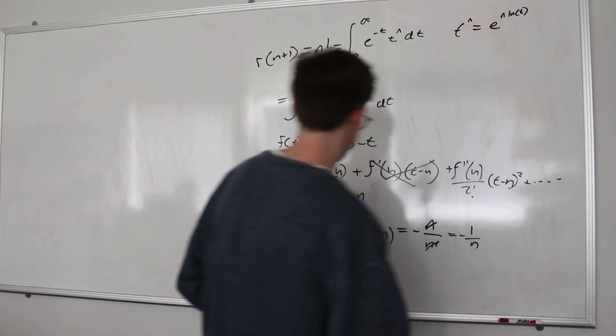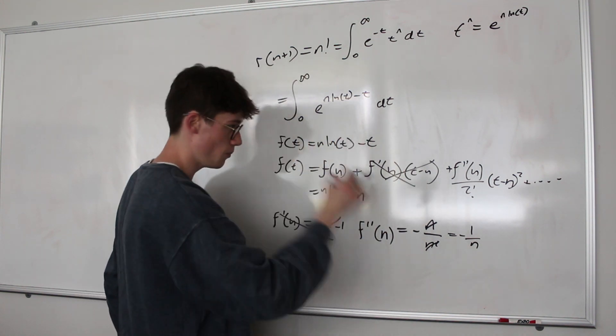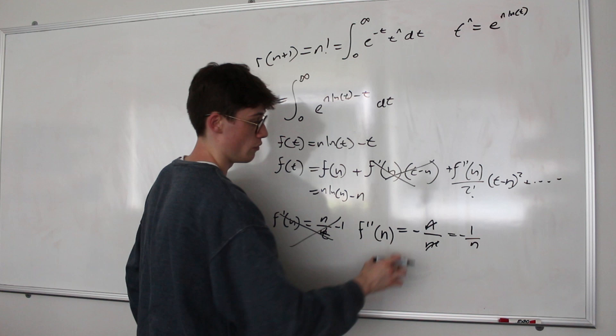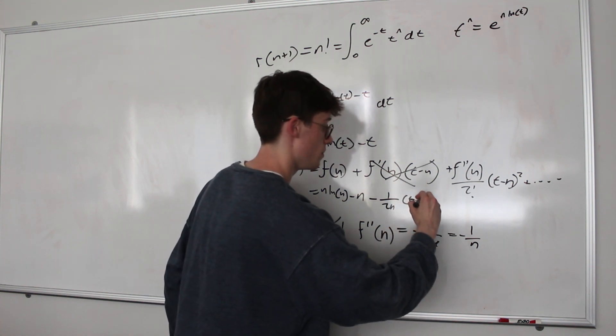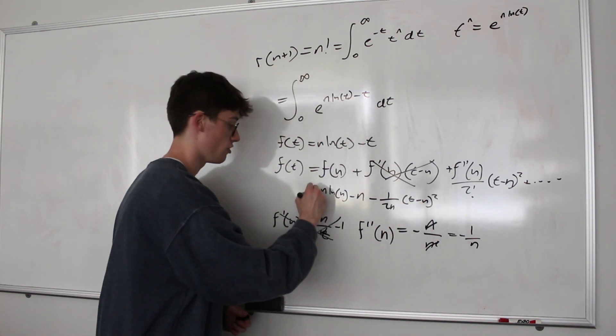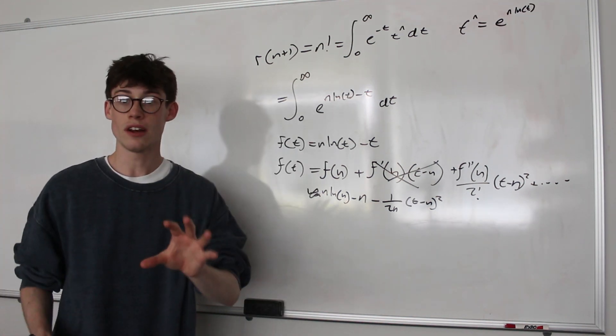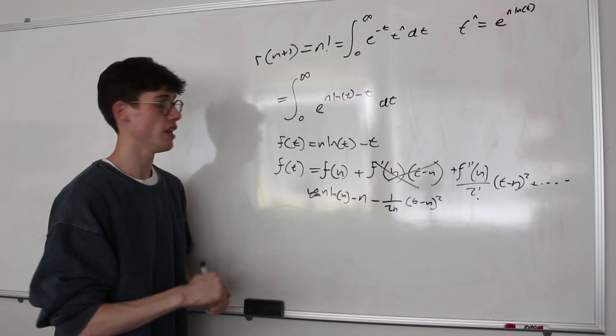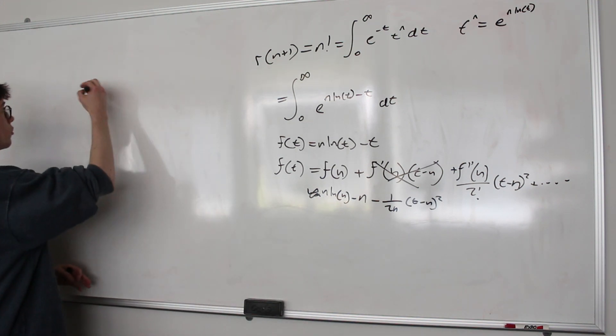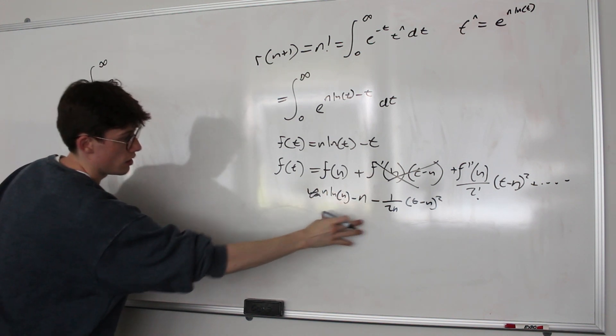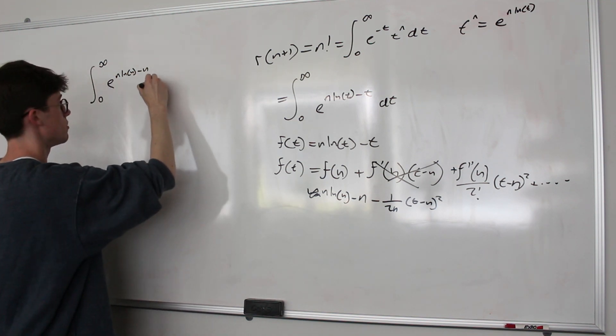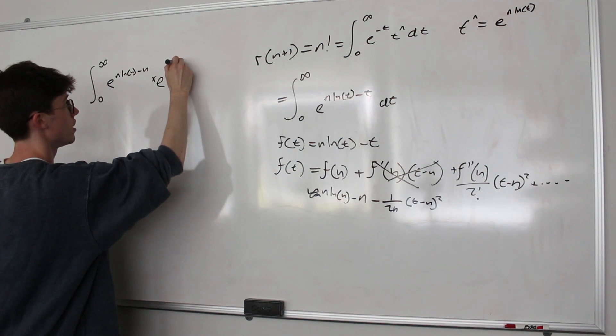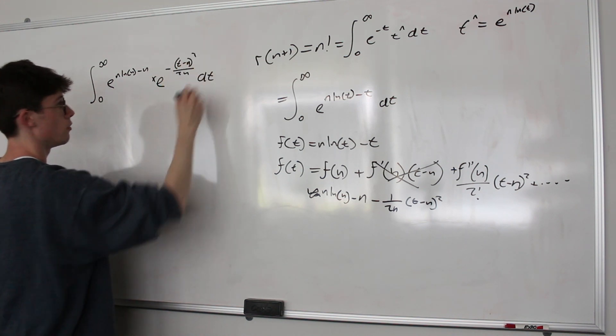Alright, great. So we're in a really good position to evaluate our Taylor series now. Because all we've got to do is swap out f prime prime of n for negative 1 over n. So it's going to be minus 1 over 2n, not forgetting our 2 factorial, times t minus n squared. And we're going to leave it there. So really this should be a roughly equal to sign. Okay, so now we have Taylor expanded our function of t enough. We're going to rewrite our integral. So we're now looking at the integral from 0 to infinity of e to the power of this whole thing here, which is n times the natural log of n minus n, times by e to the power of negative t minus n squared over 2n with respect to t.